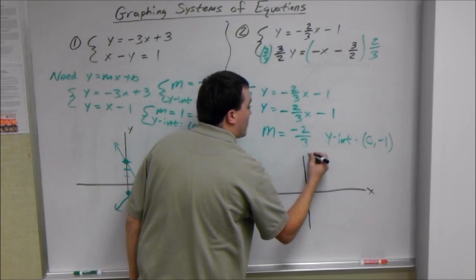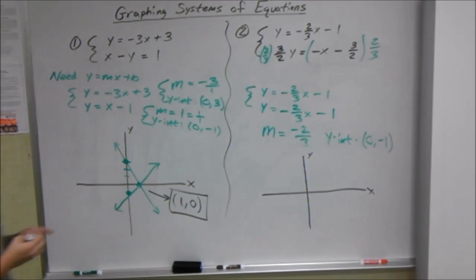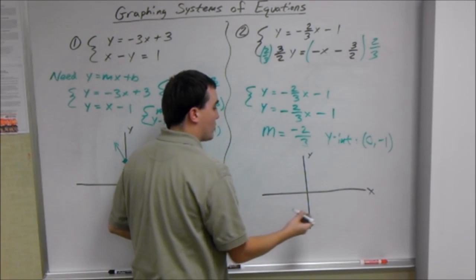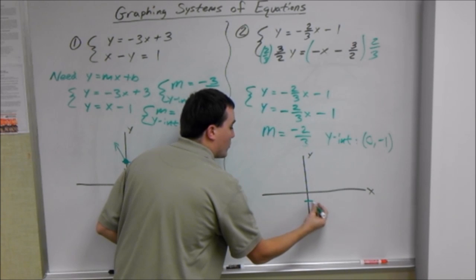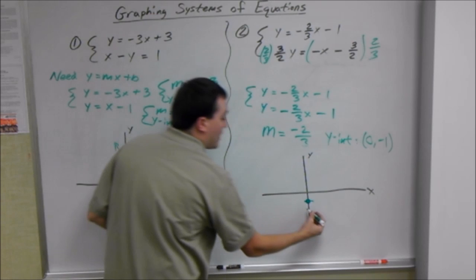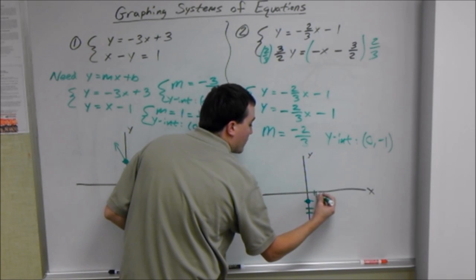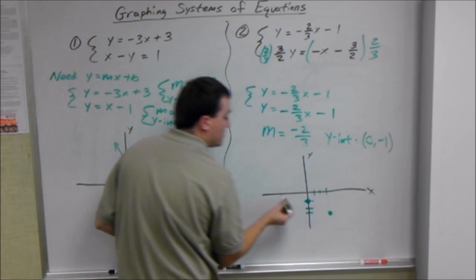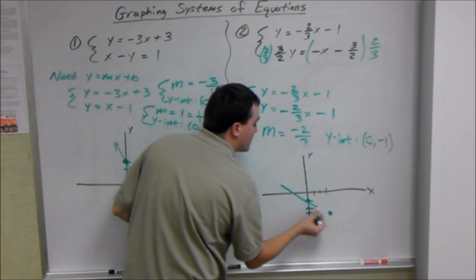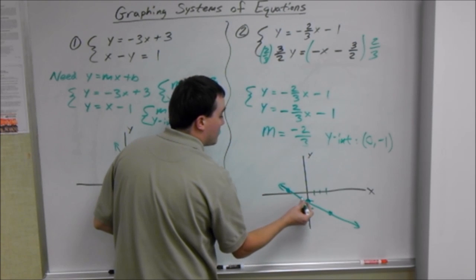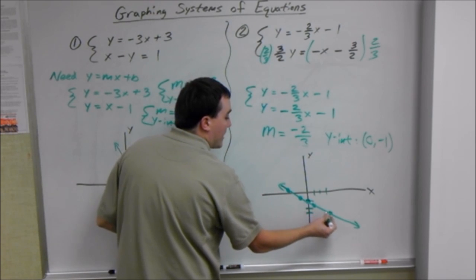X-axis, y-axis. Since they're the same line, we only have to go once. We have a point at 0, negative 1, so over 0, down 1. That's our y-intercept. And then our slope is down 2, over positive 3. So it's about right there. And since it's the same line, we know by definition, again, these lines intersect at every point.